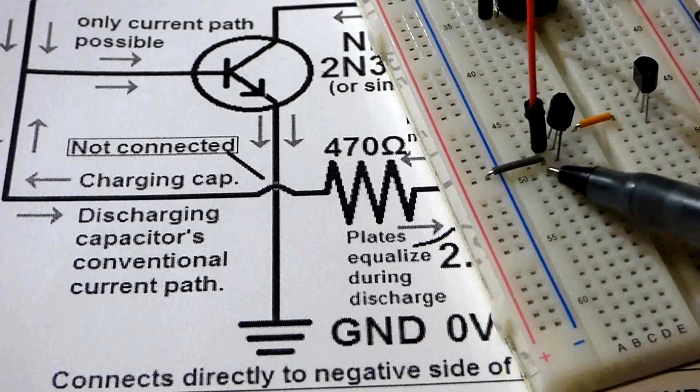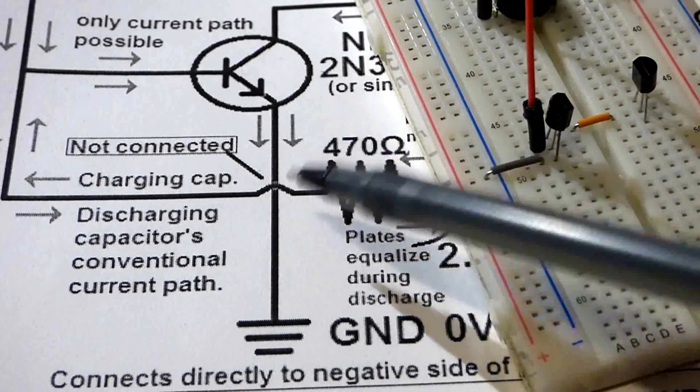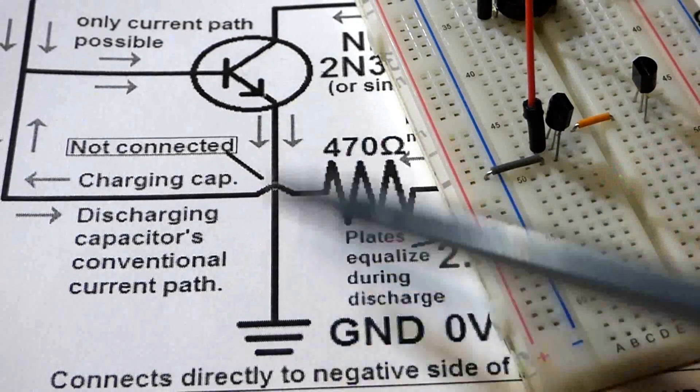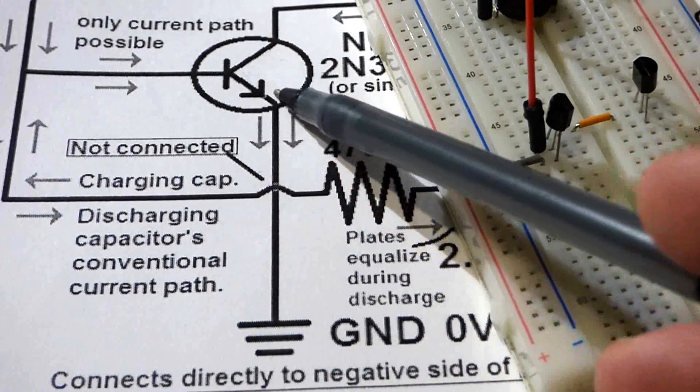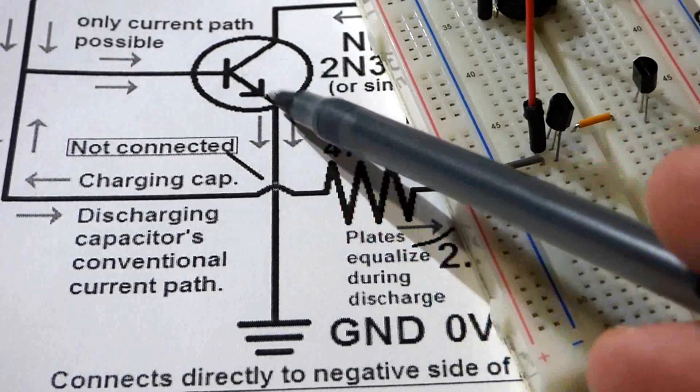Now we just attach the emitter of the transistor right to negative. And on the schematic you can see that the arrow is always on the emitter side when you're looking at this transistor.